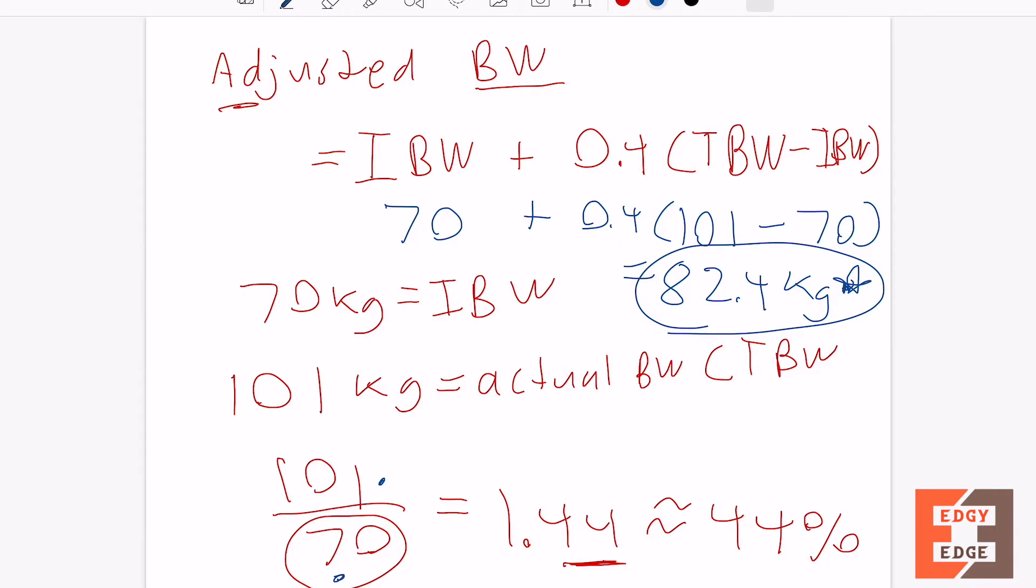Some different institutions might change this number here - it might be 0.3 or 0.2 or 0.5 depending on institution. But common practice is they use 0.4. That's just an institutional protocol-based thing. Generally 0.4 is the common one used now.